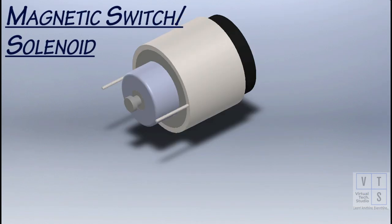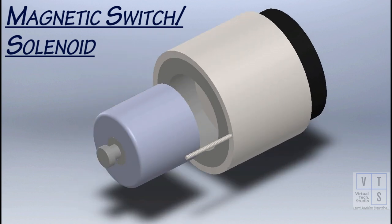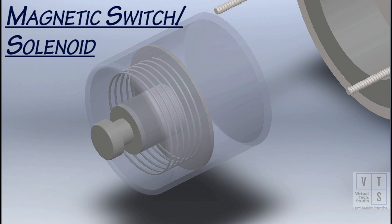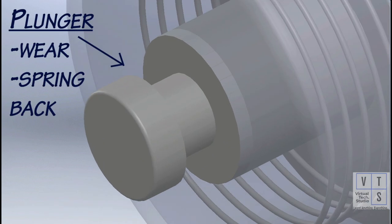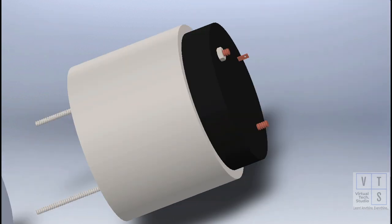We start our inspection process with the magnetic switch, also known as solenoid. Inspect plunger for wear. Replace if necessary. Pull out the plunger and release it. The spring inside should move the plunger back to its original place quickly. If not, replacement is necessary.